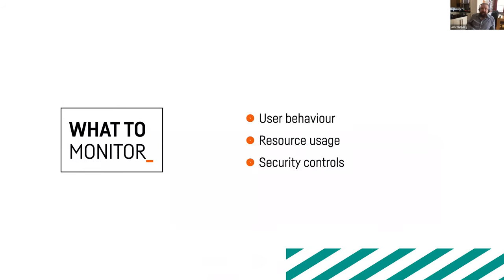In terms of monitoring, if you're not monitoring you're introducing avoidable uncertainty. You should monitor user behavior — what users are doing, what API calls they're making. Monitor resource usage — CPU, memory, database requirements — and how that compares to resource availability, which can drive the auto scaling behaviors described earlier. Security controls in AWS also need to be hooked up to monitoring systems so you can see what's going on. Please add monitoring if you don't have it — otherwise you're flying blind.